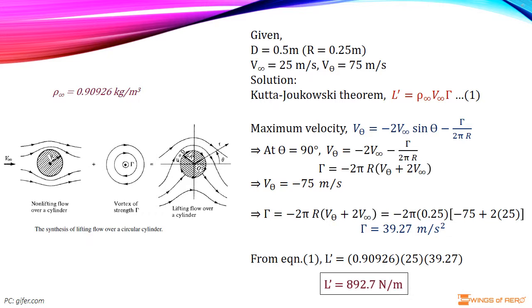Now, we can find out the required lift per unit span on the cylinder. Substitute density, velocity and circulation values in equation number 1. And simplify, we get lift per unit span on the cylinder, L' is 892.7 Newton per meter.